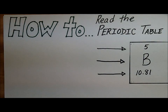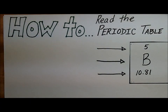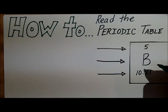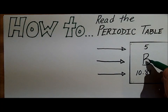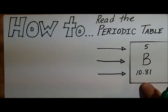We're going to look at how to read the periodic table with this video. We're going to start by looking at one of the tiles that you might see on the periodic table. This one is for boron. And so you're going to see these numbers.